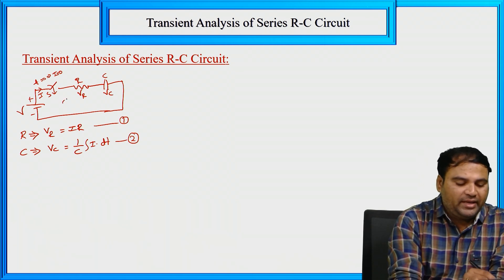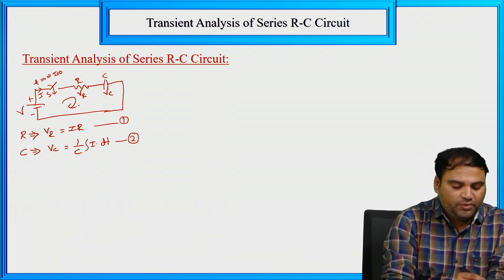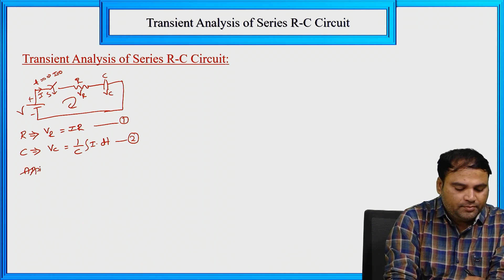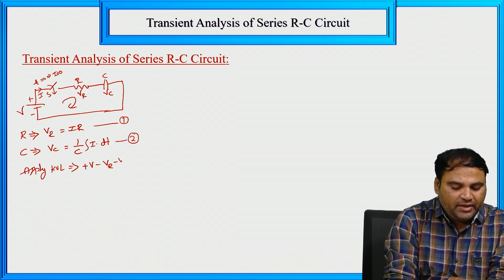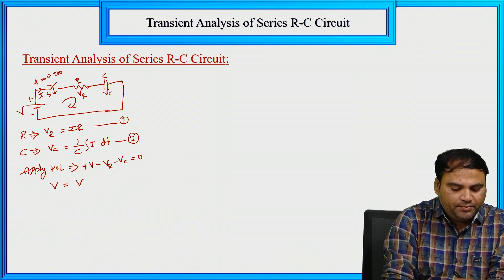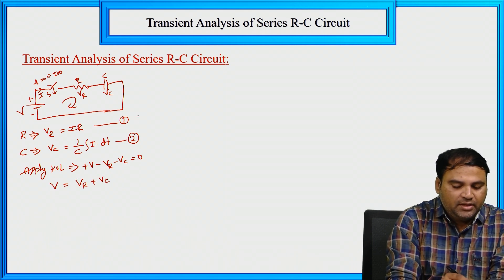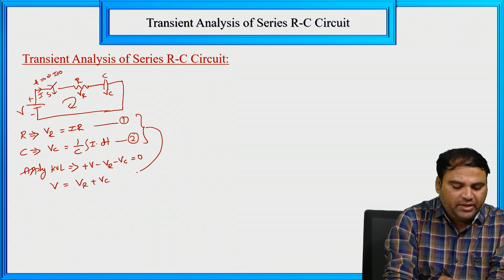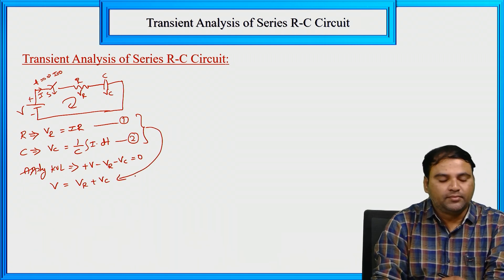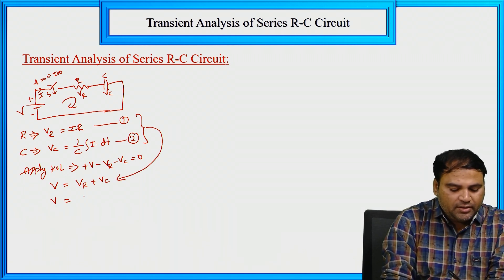Now apply KVL in this single loop. We get: plus V minus VR minus VC equal to 0, which gives V equal to VR plus VC. Substituting the two equations: V equal to I·R plus 1 by C integral of I dT.